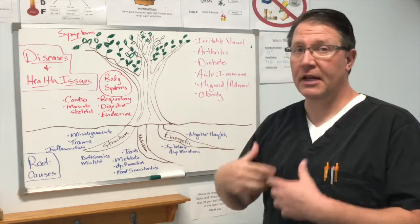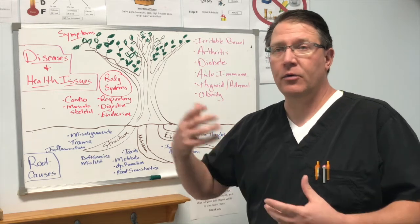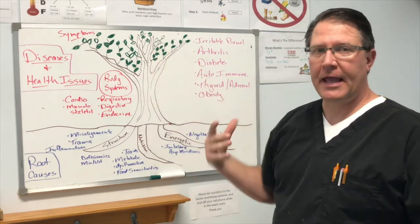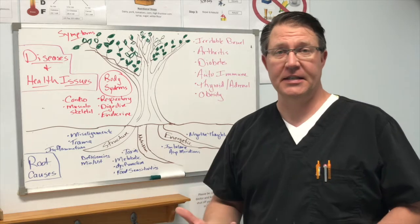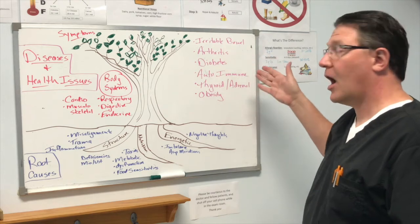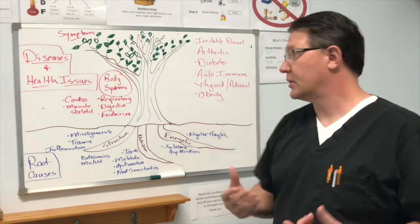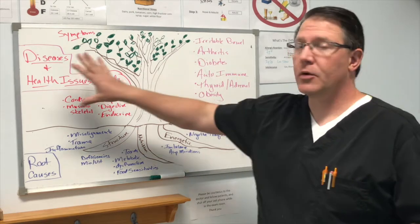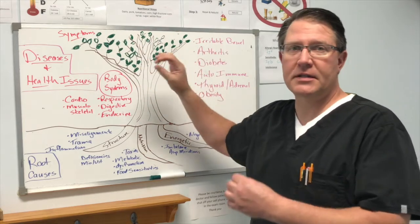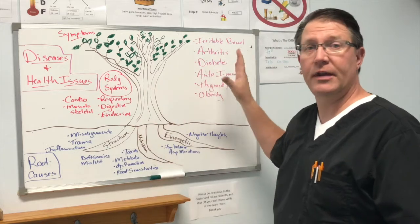Symptoms can be plentiful and they can be changing and sprouting up new ones here and there. And when we actually have enough symptoms in a category, we may actually classify it as a disease. Something like irritable bowel, arthritis, diabetes, autoimmune issues, thyroid or adrenal or endocrine issues, as well as obesity. So most of conventional medicine takes care of this side or at least focuses on this side chasing after the symptoms or the signs or the disease or the diagnosis.